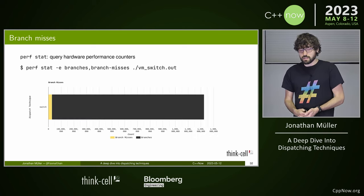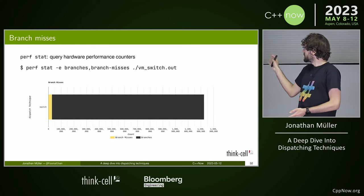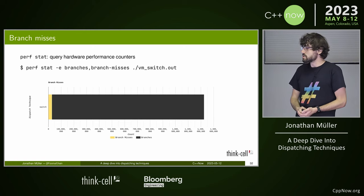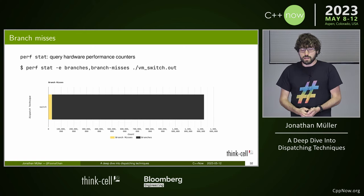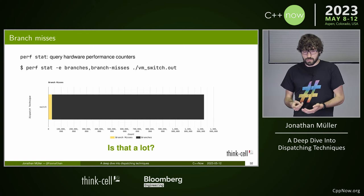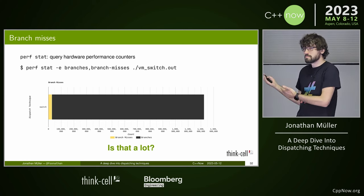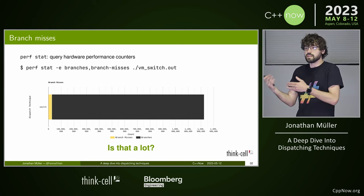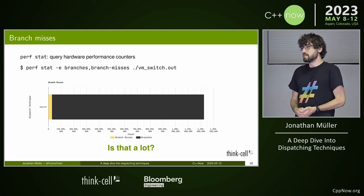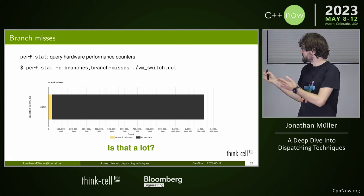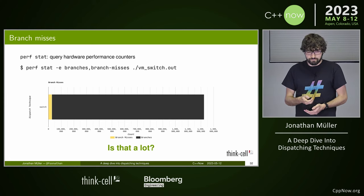One way to measure branch misses is using Linux perf stat, a tool that queries hardware performance counters. We can query how many branches were taken and how many were mispredicted while executing our bytecode interpreter. The result shows total branches and then the mispredicted portion. For the sake of this talk, let's say this is a lot — we want to bring those branch misses down.